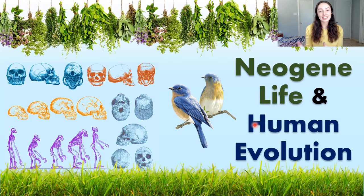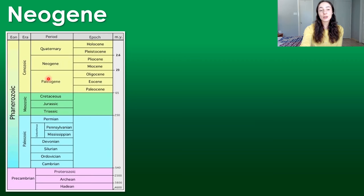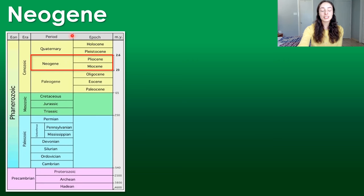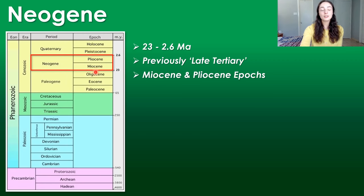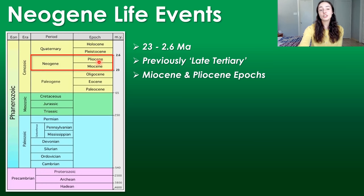The Neogene is the middle to late Cenozoic era. The Cenozoic is the era we are currently living in — we are in the Quaternary period, the very latest period in the Cenozoic — but the Neogene period occurred from 23 to 2.6 million years ago, just before the Quaternary. It includes the Miocene and Pliocene epochs.